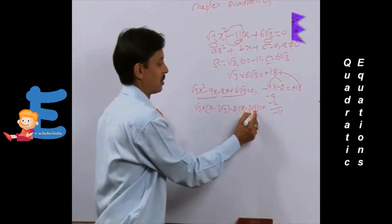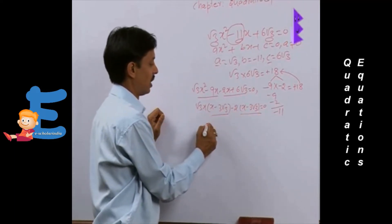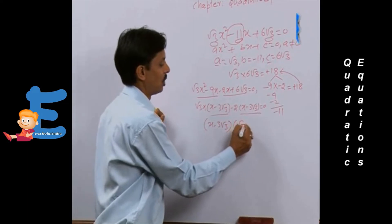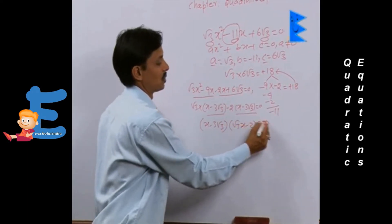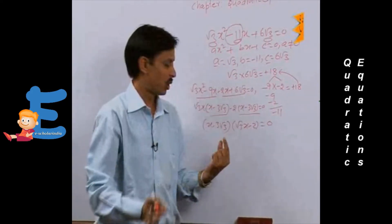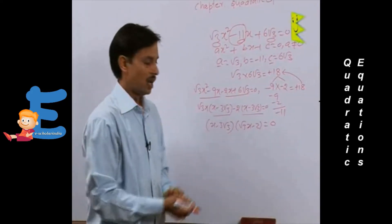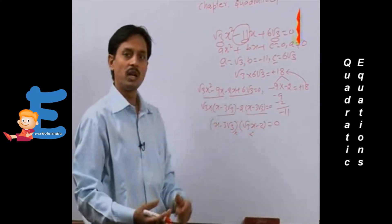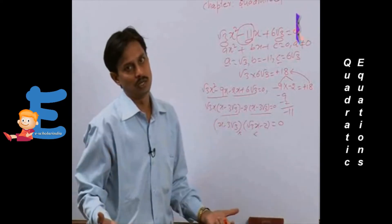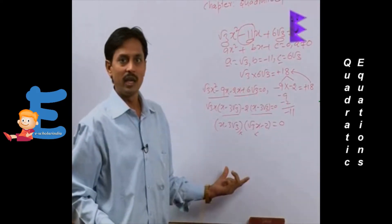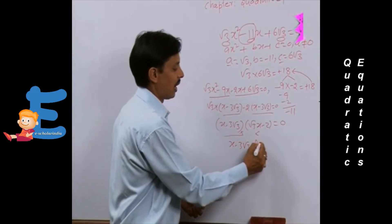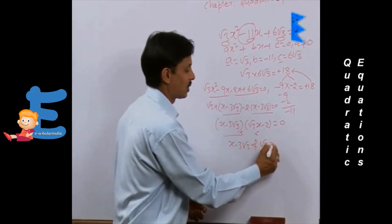Since (x - 3√3) is the common factor, we get (x - 3√3)(√3x - 2) = 0. The quadratic equation has been expressed as the product of two linear factors. Since the product of two numbers is 0, either the first is 0, or the second is 0, or both are 0. We will set each factor separately equal to 0.